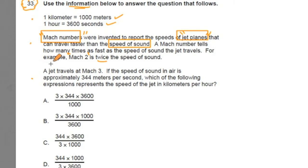A jet travels at mach 3. If the speed of sound in air is approximately 344 meters per second, which of the following expressions represents the speed of that jet in kilometers per hour? Now, these are all expressions. And we're trying to find the expression that if we worked out all the math would get us to kilometers per hour. We'll notice that this is distance over time. That's a rate. So we want to make sure that we come up with an expression which has distance over time. Distance is going to go on the top. Time is going to go on the bottom. And it's going to convert these values into kilometers per hour.